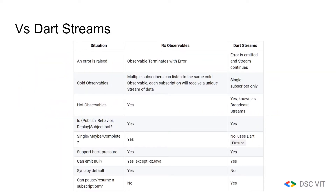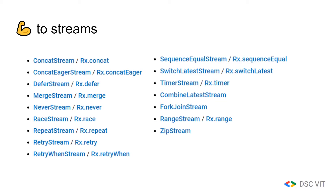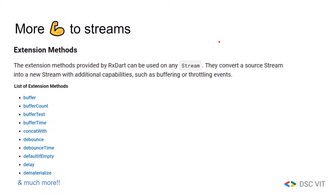Versus Dart streams, I've listed out how RxObservables are different. RxDart includes all of these classes to create custom streams — repeat stream, race stream, zip stream, and many more. It also uses extension methods, so there are a multitude of extension methods you can use. We are going to see one of these called debounce.